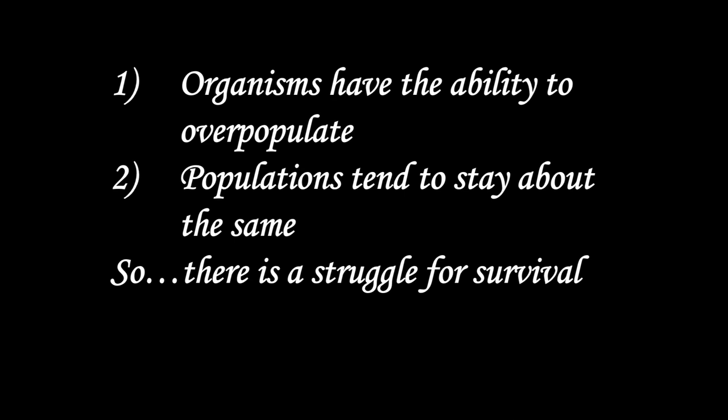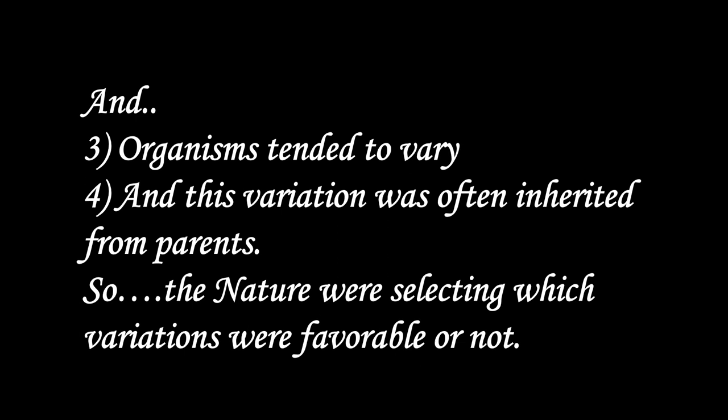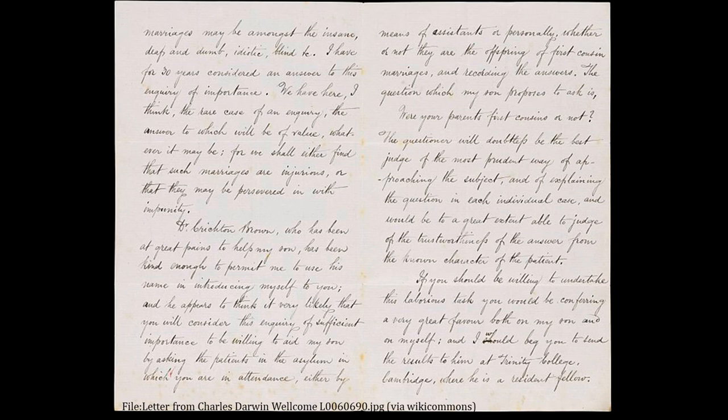Darwin came to these conclusions: first, organisms have the ability to overpopulate; and second, since populations tend to stay about the same in a particular area, there is obviously a struggle for survival. Organisms also tend to vary, and this variation was often inherited from the parents. So nature was selecting which variations were considered favorable or not. This would later be formalized as evolution by the process of natural selection.